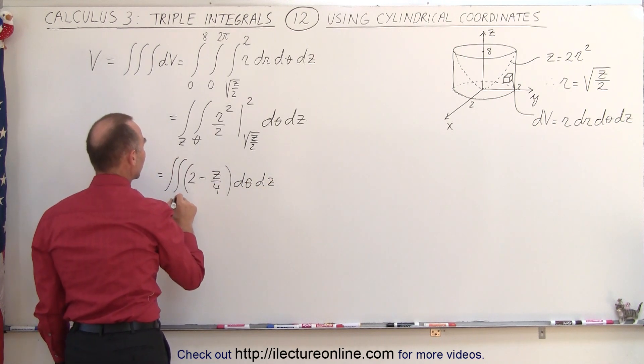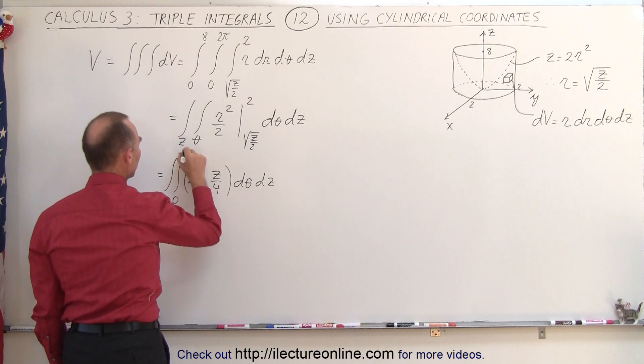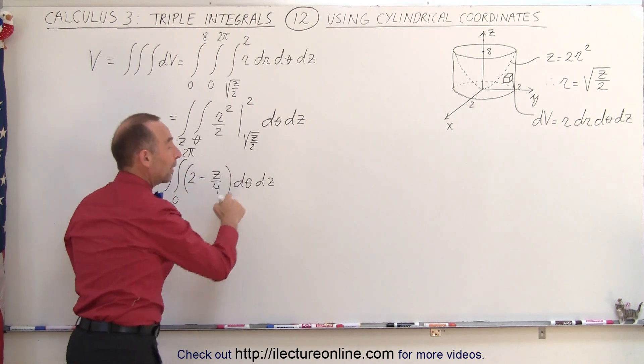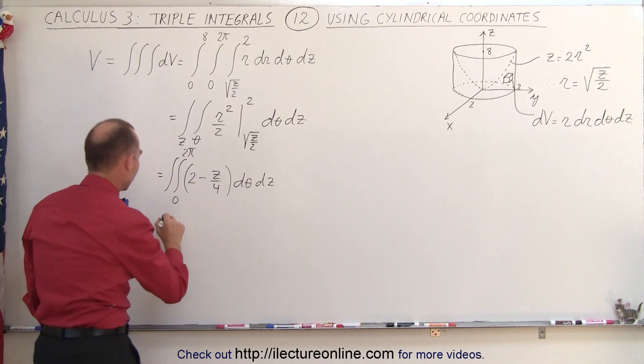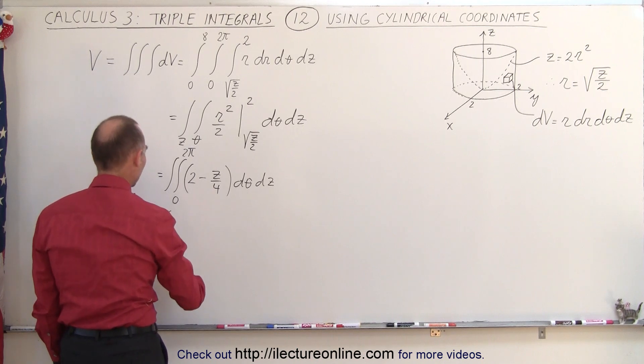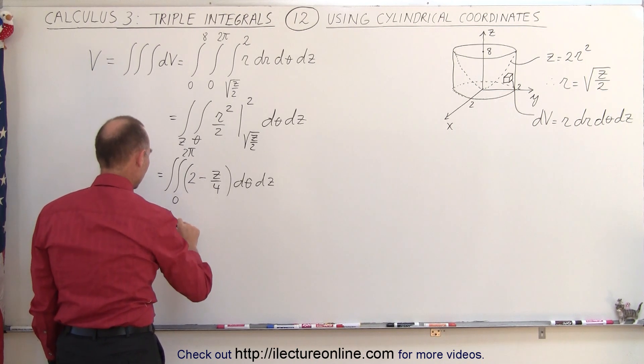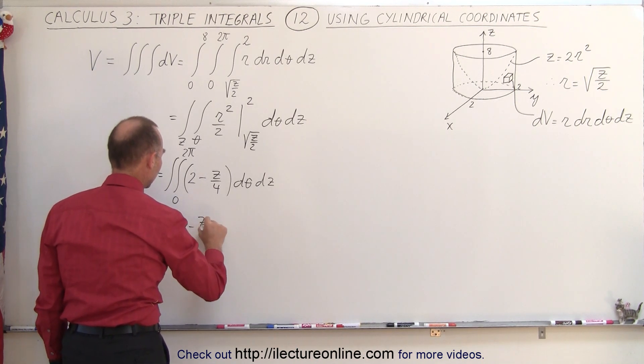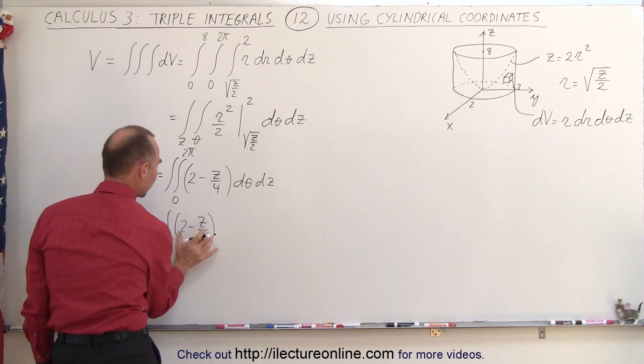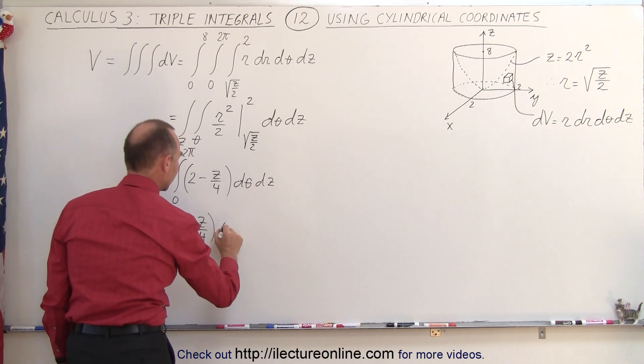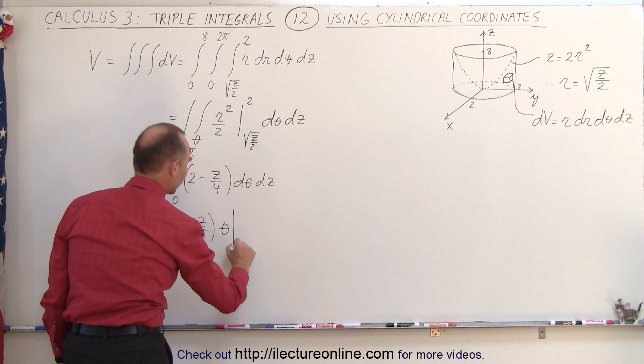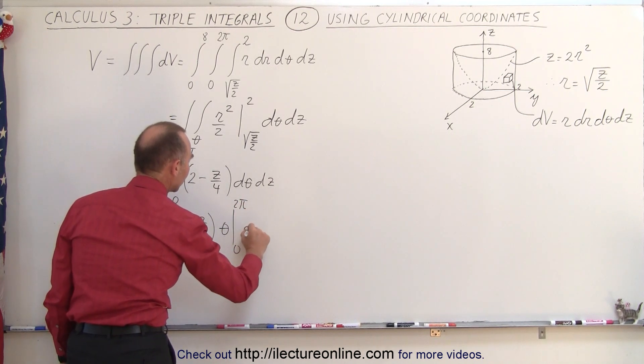Now, dθ is going to be integrated from 0 to 2 pi, so when we integrate dθ, we'll get theta, so this is equal to the integral. We have one left over z. We still have 2 minus z over 4, which acts as a constant when we integrate over theta. This is theta, evaluated from 0 to 2 pi, and dz.